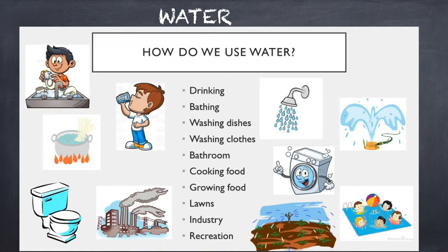Another important natural resource is water, which is very important for our survival. Water is a renewable natural resource that is essential for life. Humans, animals and plants all need water to live. We need water to drink, wash, irrigate our fields and for many other purposes. Water is a very precious resource and we should not waste it.